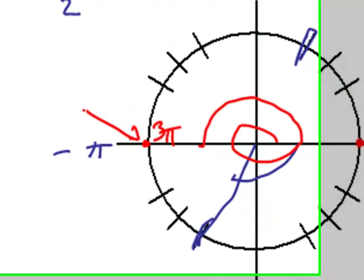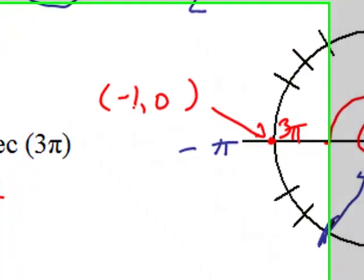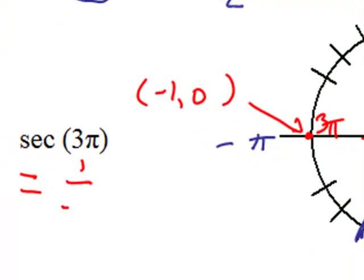Three pi is related to two pi, but it's in a different location. So let's explore three pi a little bit. This is the point negative one zero. And secant is the reciprocal of negative one, like one over negative one. But that's just negative one.